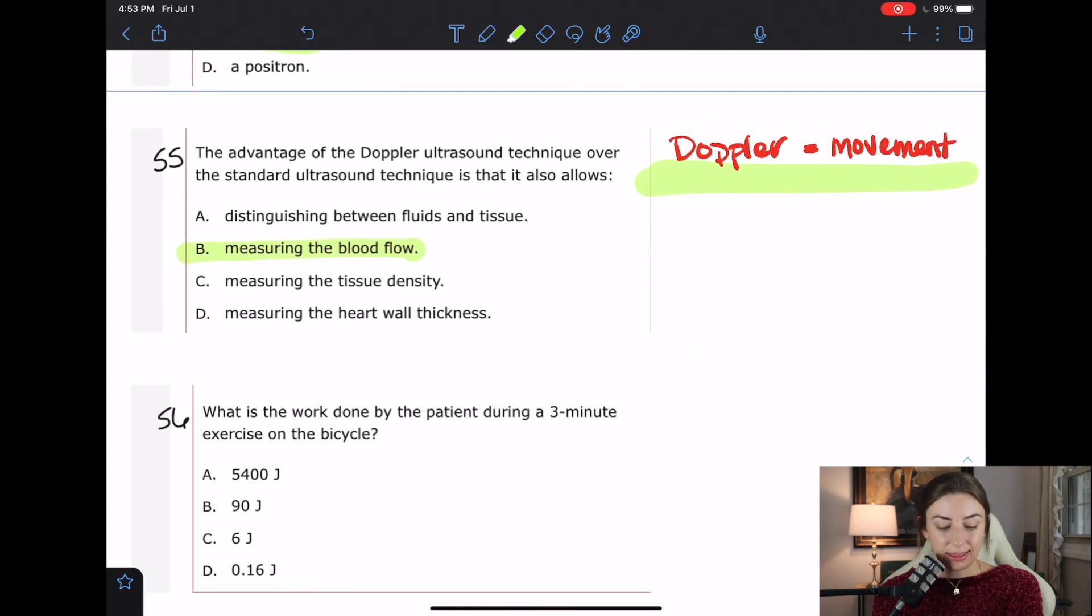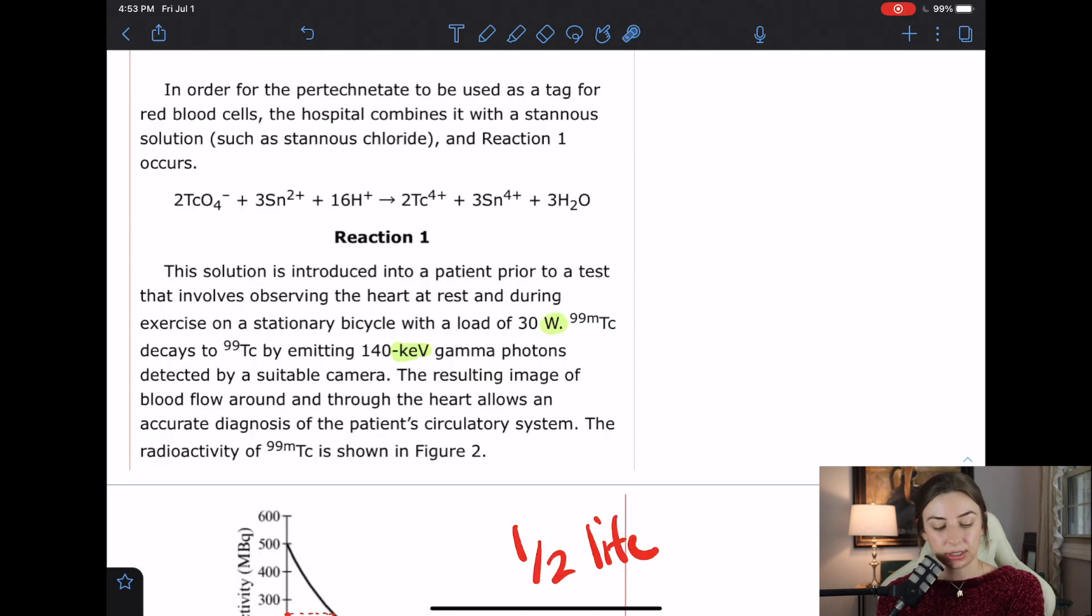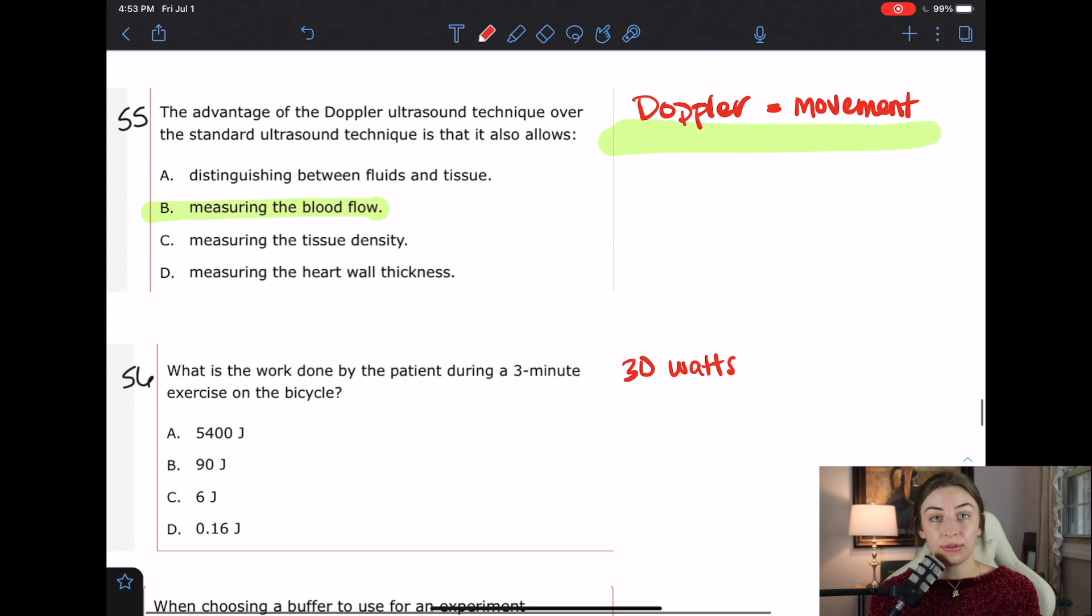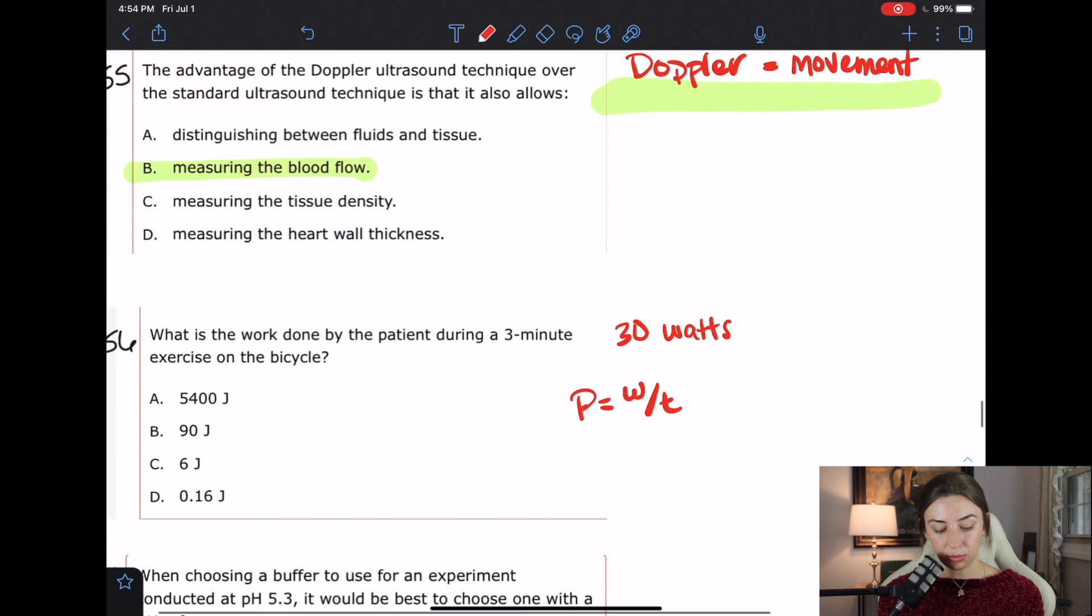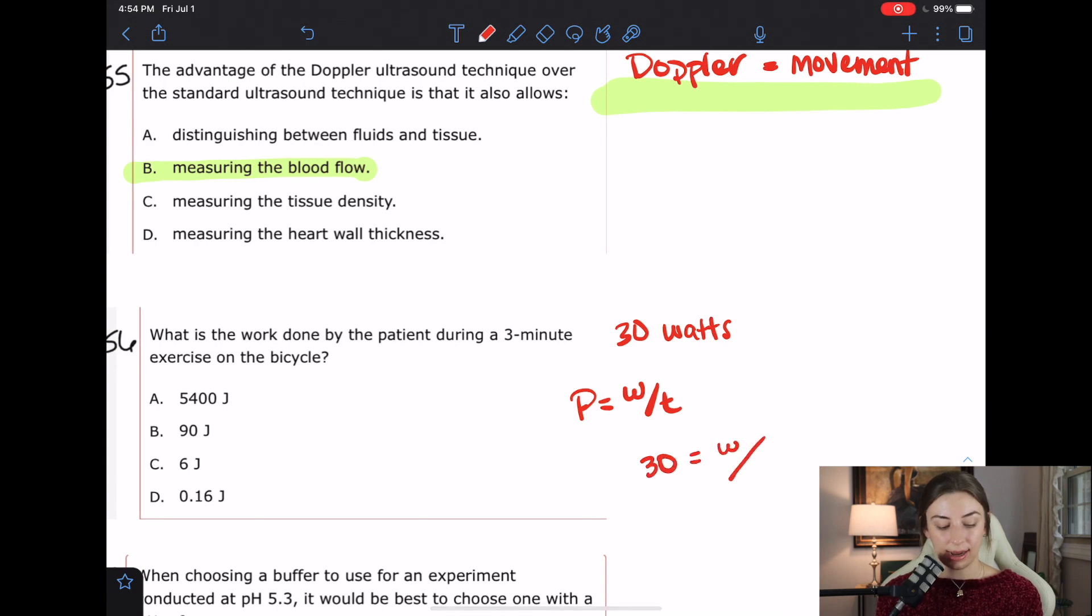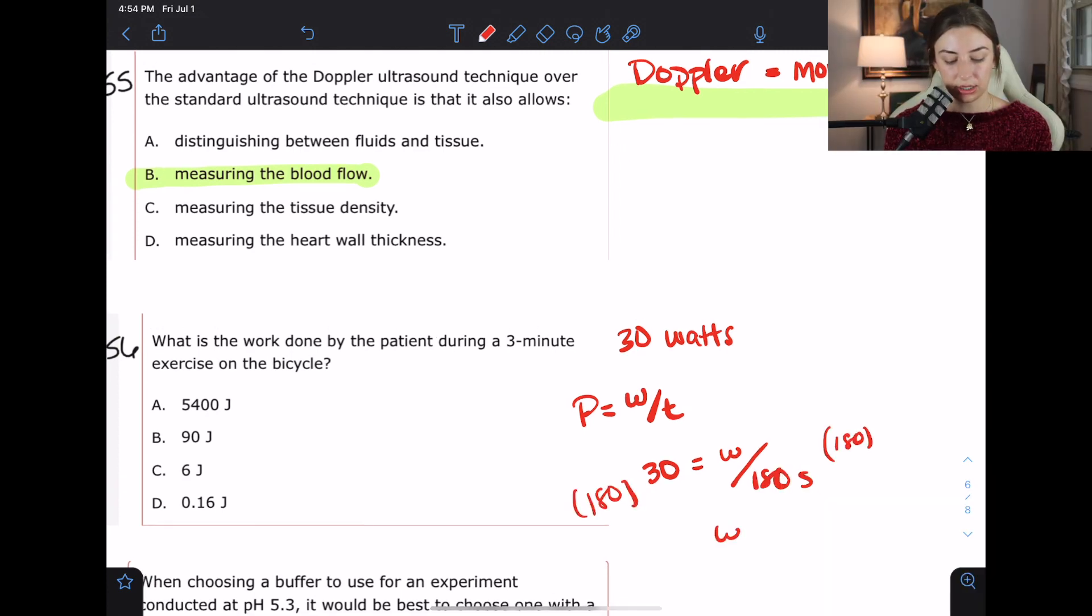Question 56. What is the work done by the patient during a three-minute exercise on the bicycle? So I knew this other unit was going to come in handy. We know that the load of the bicycle is 30 watts, which is a unit of power. And I know if you're like me, when you see work, you tend to think of work equals force times distance, which is totally fine for that to be your instinct. But when we're given a measure of power, we should be able to see that the power equation is going to come in handy here. So it's power equals work over time. We know our power is going to be 30 watts. We're looking for work. And we know our time. It's not three. It's actually the unit of the time is in seconds. And so it's going to be 180 seconds. So multiply both sides by 180. And you get that the work is equal to whatever 180 times 30 is. If you can't do that math quickly in your head, you should at least know that it's going to be a large number, but it is 5400 joules.